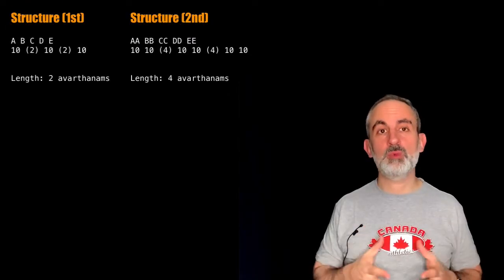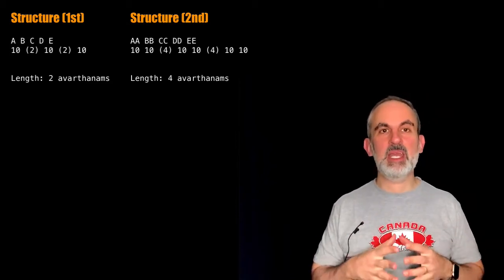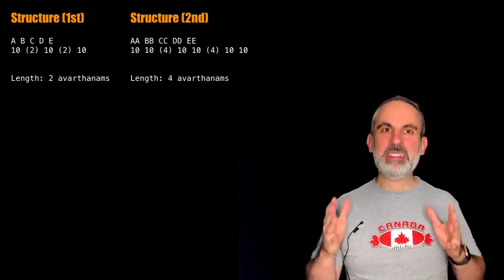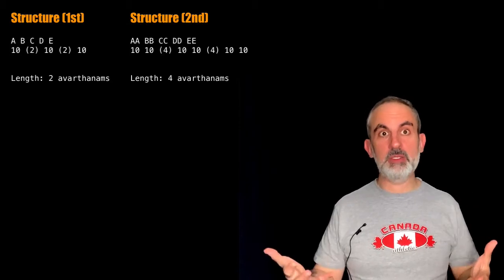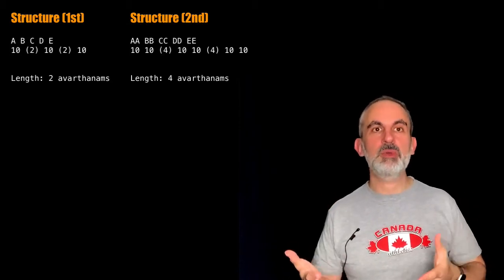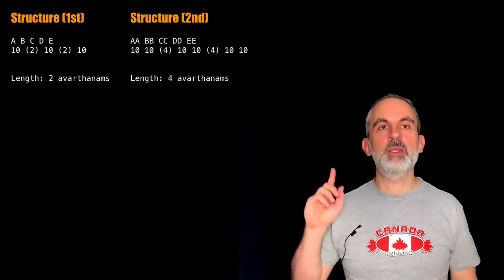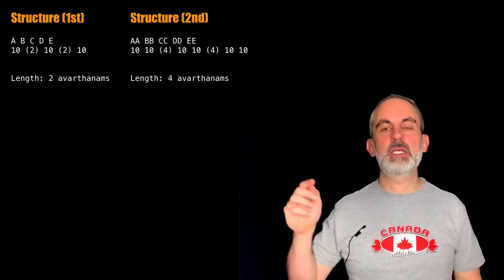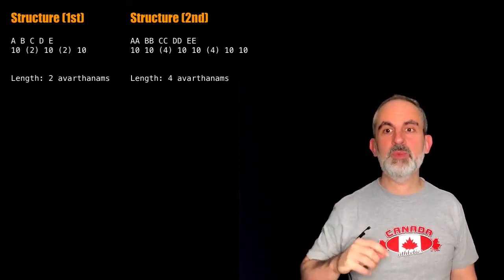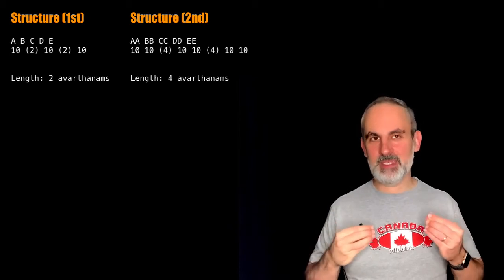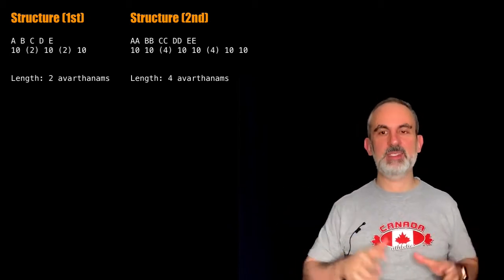When approaching a korvai series, it helps to see the structures of the current korvai and the previous ones. So that's what we're doing now. You can see here the structure of the first and second korvais, because it's very evident in this way what's going on. You can see the developments.